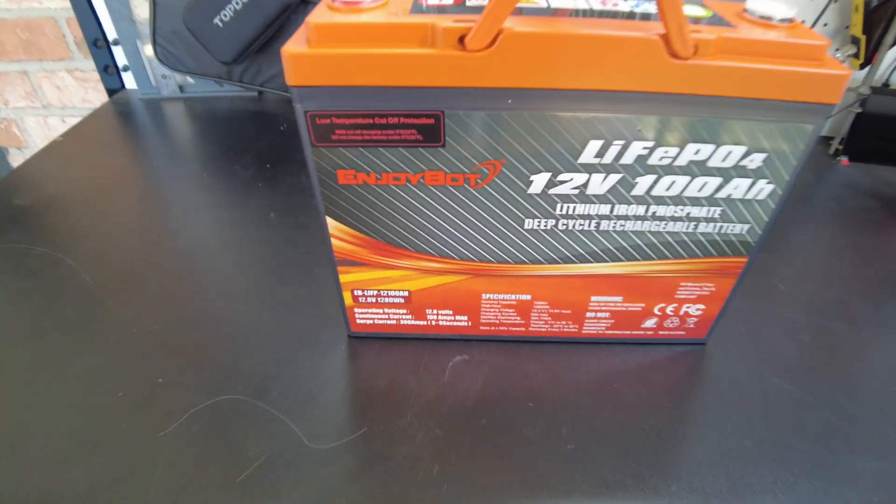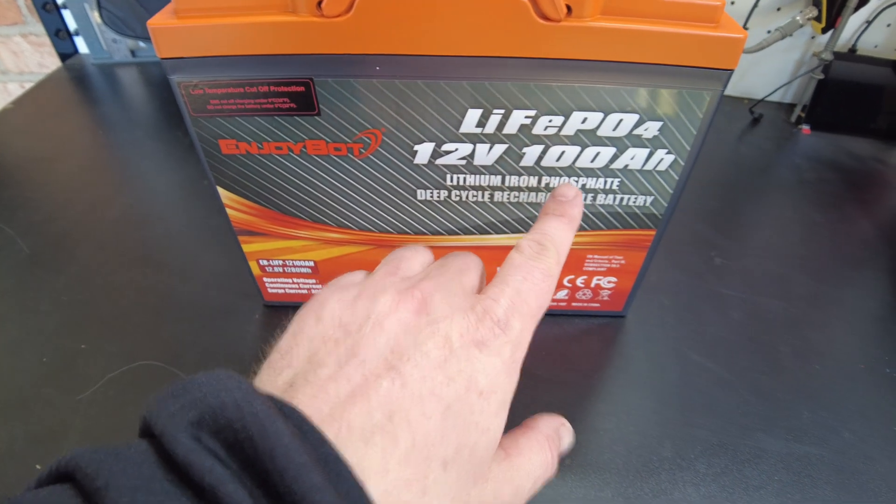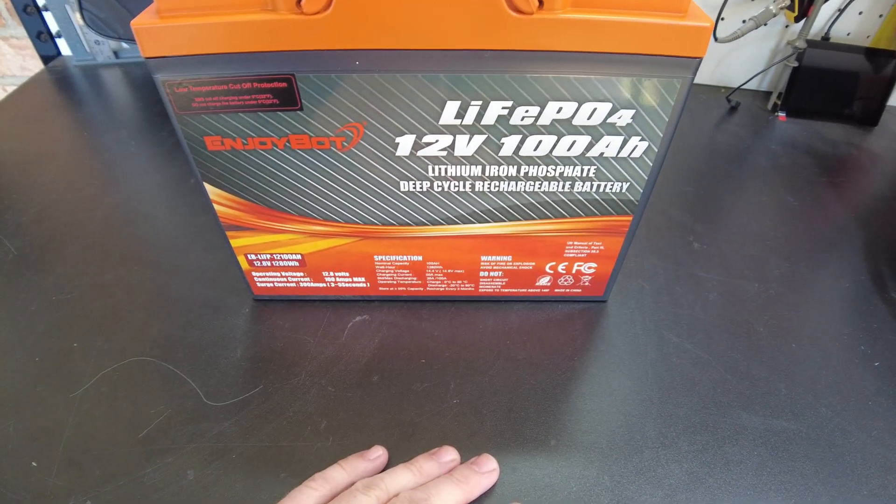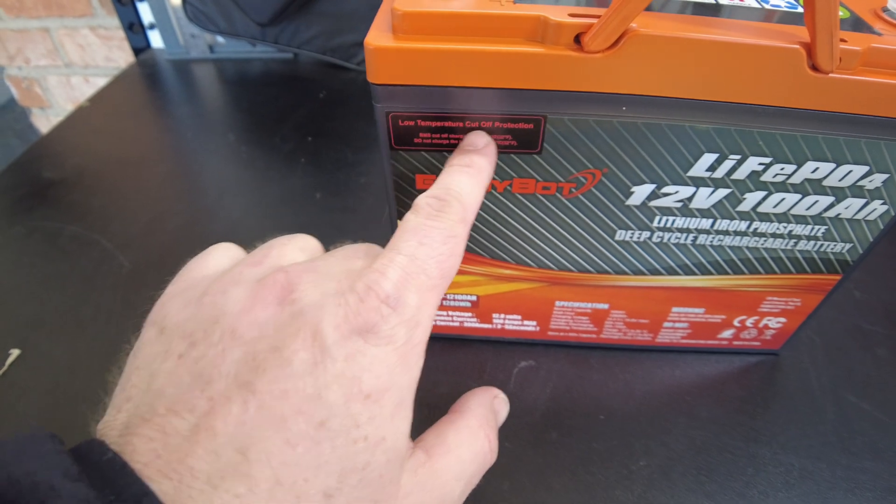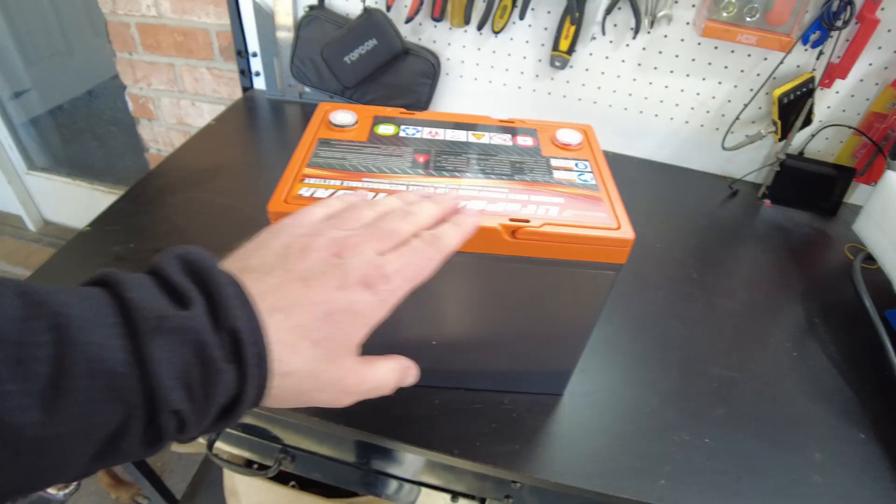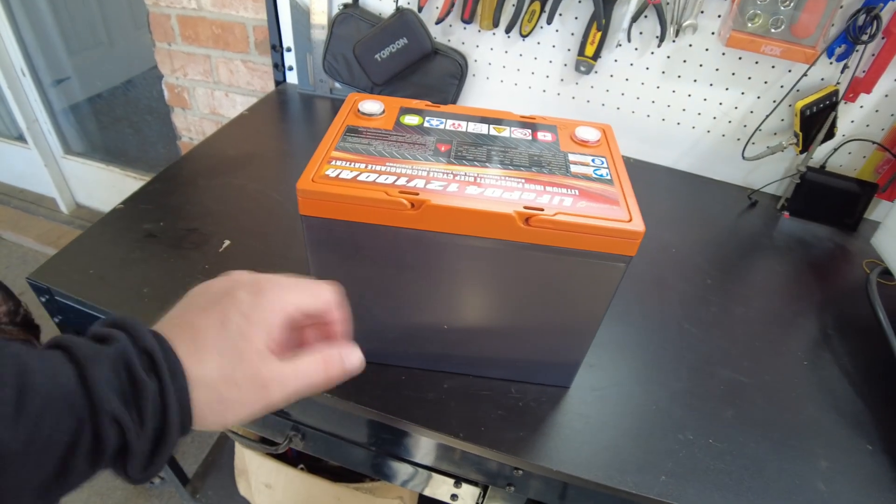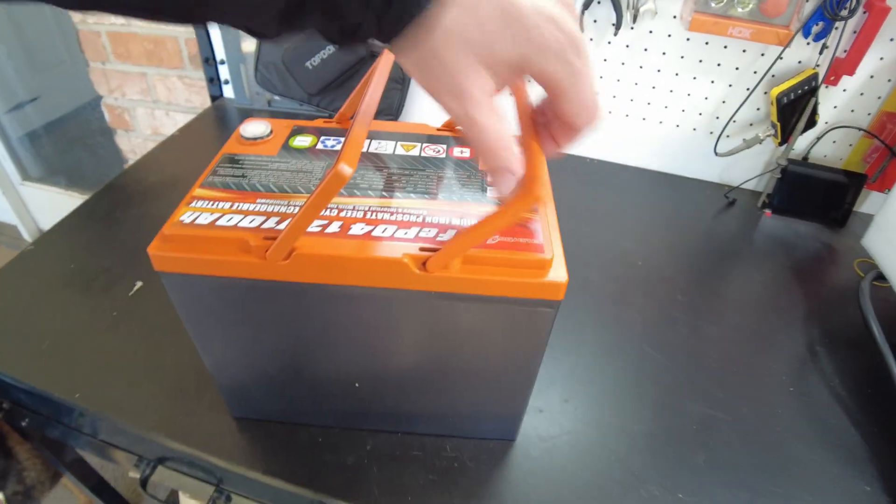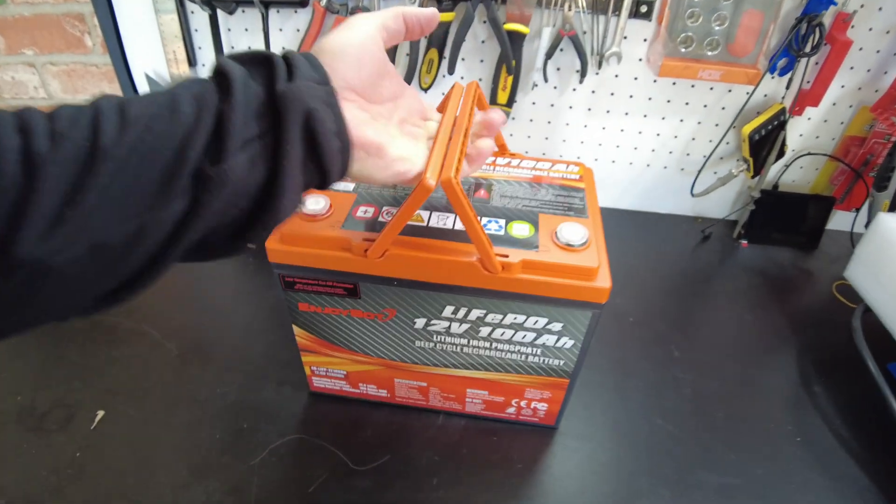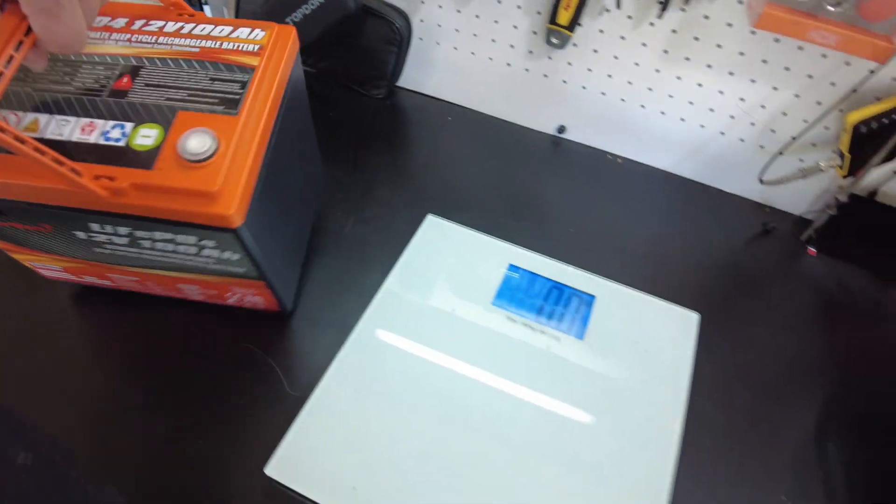Let's take a closer look. So we've got a 12 volt 100 amp hour lithium iron phosphate battery. It says low temperature cut off protection. Very nice orange and kind of like a carbon gray color scheme. I do like their color scheme.